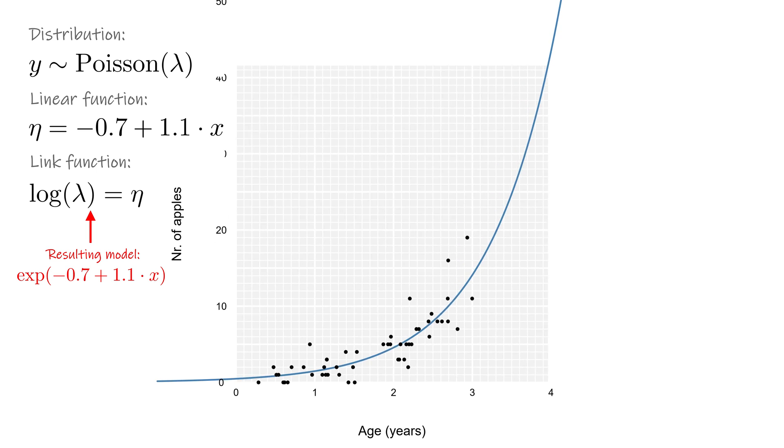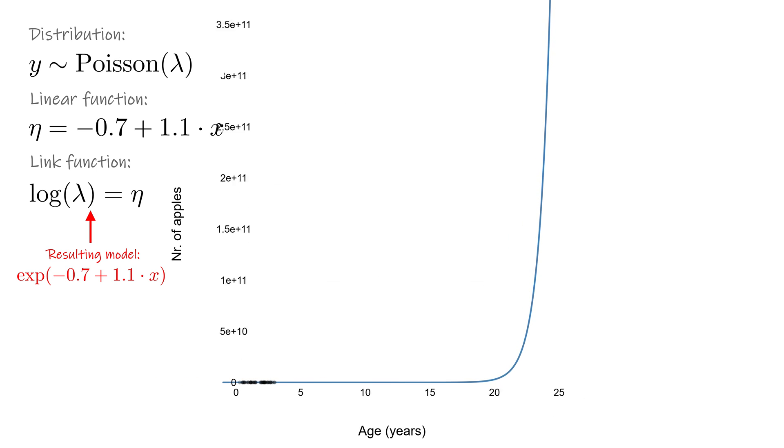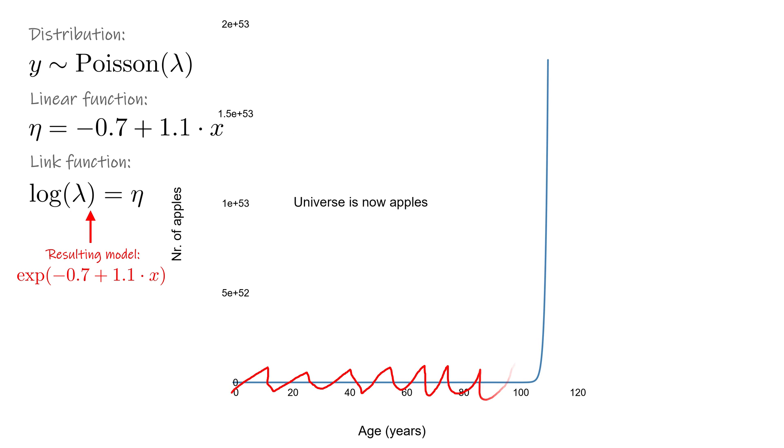Exponential relationships grow very large very fast, so in a few decades we should be able to solve world hunger. And about a hundred years later, all atoms in the observable universe will have been converted to apples. Unless, of course, we pay attention to the limitations of our model. This is no different than before with ordinary linear regression.